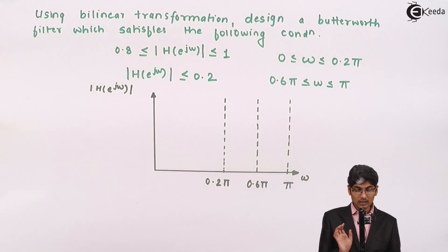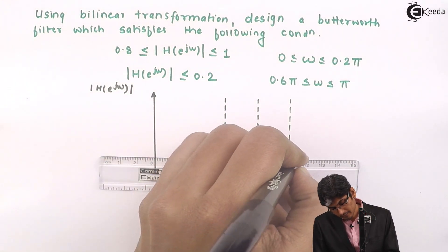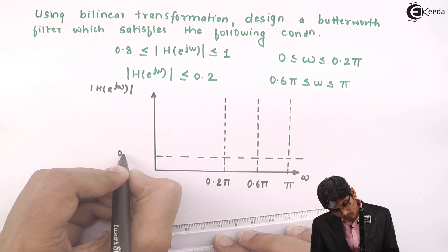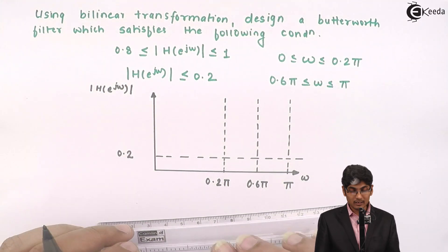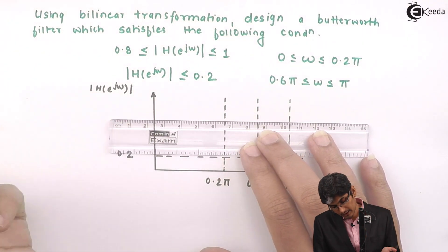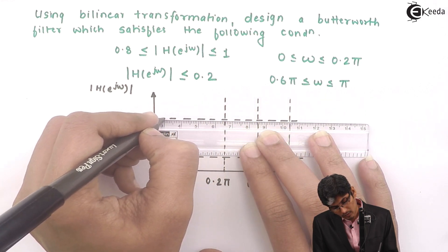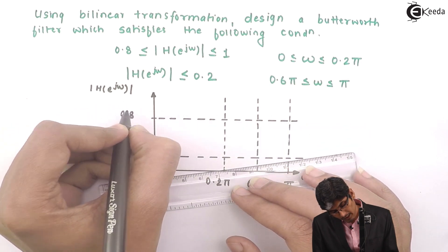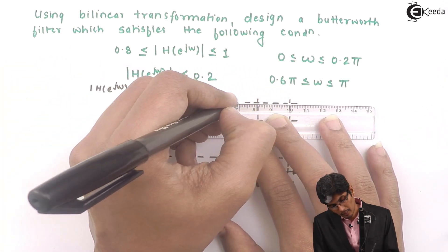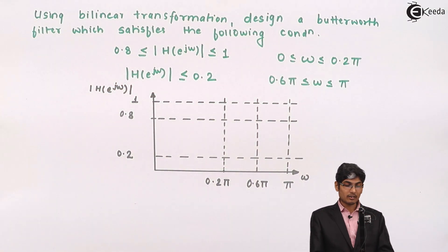Let us demarcate the amplitude lines. One amplitude is 0.2 — just 0.2, not pi. Then we have a value of 0.8, so let us mark a line for 0.8, and finally we will mark 1. So we have marked all the lines.